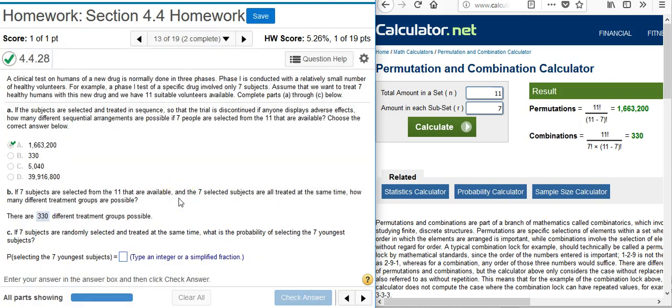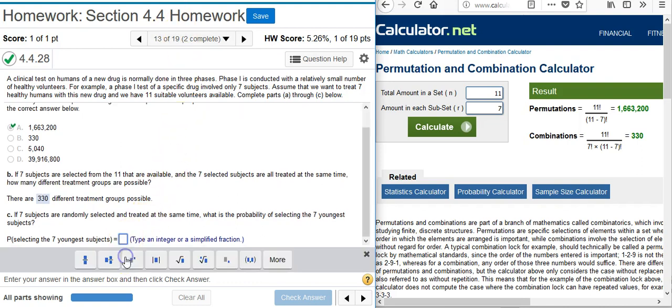And finally, Part C: If seven subjects are randomly selected and treated at the same time, what is the probability of selecting the seven youngest subjects?